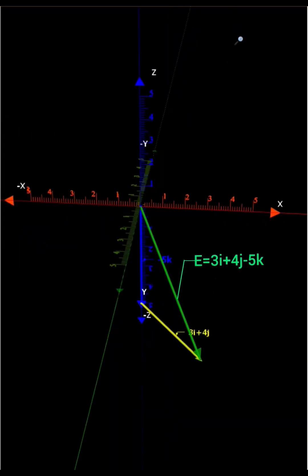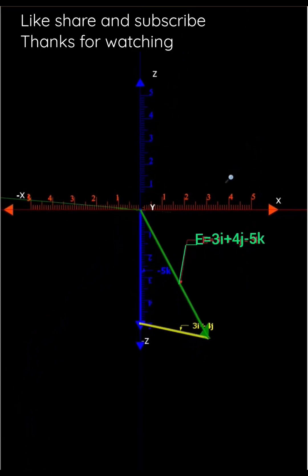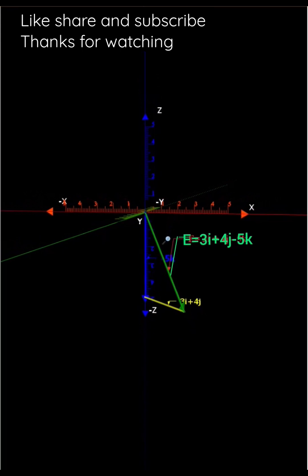Therefore, 3i cap plus 4j cap minus 5k cap is the final resultant of all three components of E. This is how we found the vector E is equal to 3i cap plus 4j cap minus 5k cap.